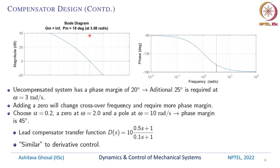Plotting the Bode diagram, we can see that the gain margin is infinity and the phase margin is 18 degrees at 3.08 radians per second. The uncompensated system has a phase margin of about 20 degrees; we need an additional 25 degrees at omega equals 3 radians per second. This can be done by adding a zero, however adding a zero will change the crossover frequency. To be safe we choose alpha = 0.2, a zero at omega = 2, and a pole at omega = 10, giving a phase margin of 45 degrees. The lead compensator transfer function D(s) is 10 times (0.5s + 1) divided by (0.1s + 1).